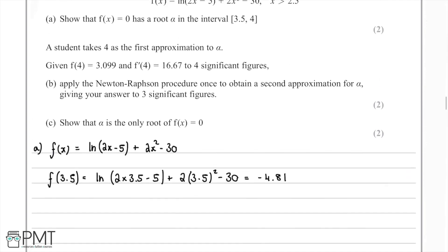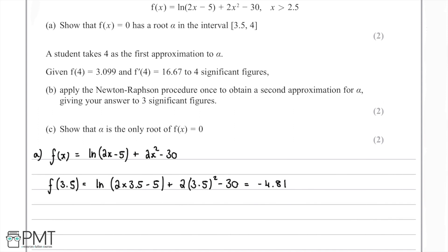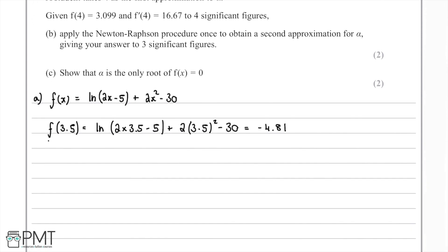We then take the end point of our interval, which is 4. f(4) = ln(2 × 4 - 5) + 2 × 4² - 30, and putting this into the calculator gives f(4) = 3.10.